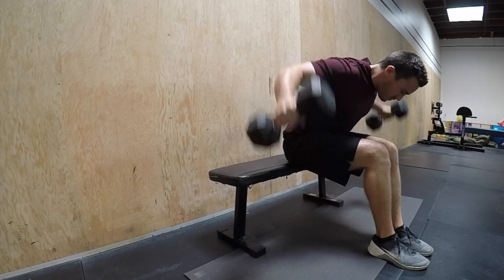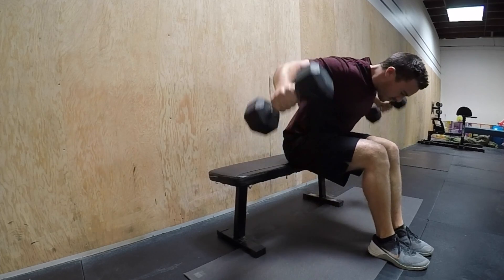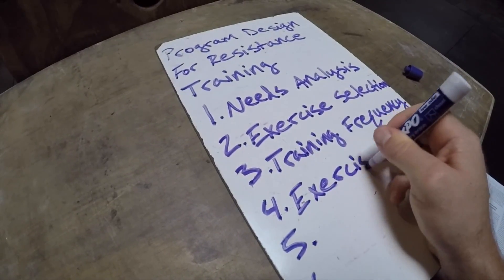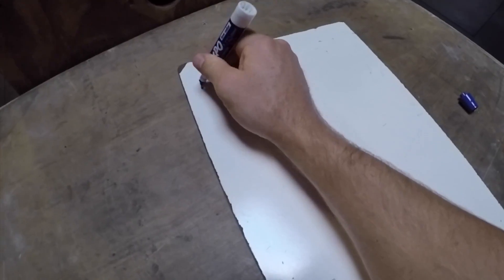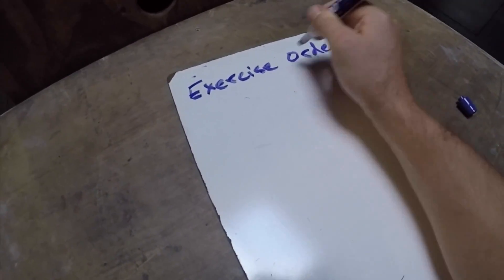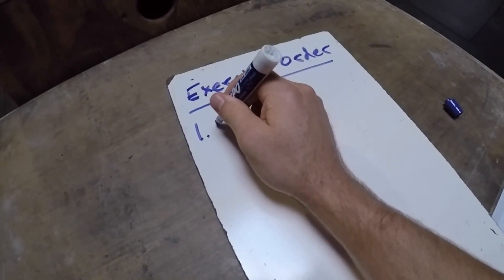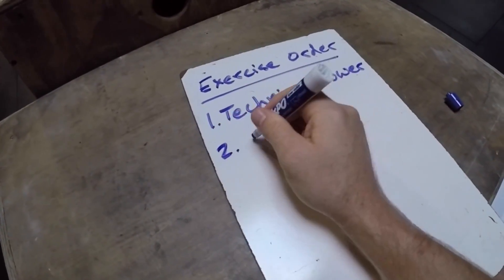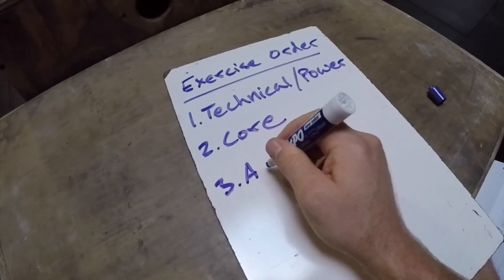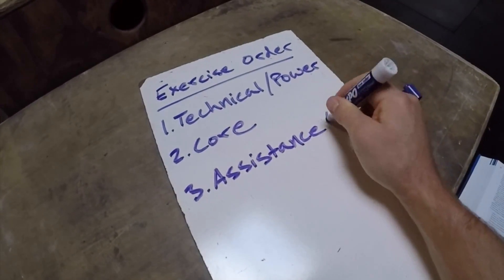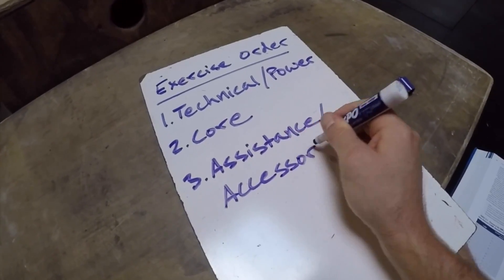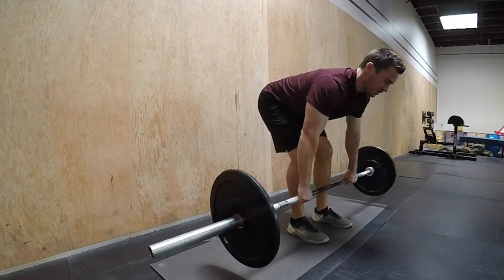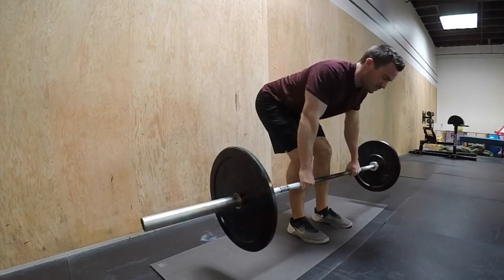Step four: once you pick the exercises, you need to place them in the right order. Exercises should be placed in the order of power or technical lifts first — like a snatch or clean — then core exercises like a squat or deadlift, basically any multi-joint exercises, and then assistance exercises like the bicep curl or knee extension, which are primarily single-joint movements.